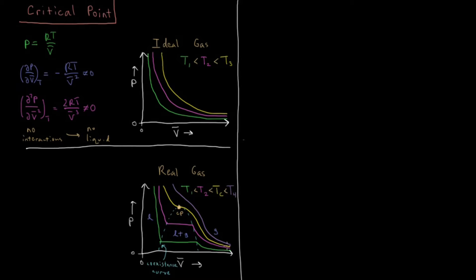At a higher temperature it takes a smaller molar volume to compress and there will be a smaller region where the pressure is flat, but again after some time it gets very high. Then there becomes some critical temperature where there's only an infinitesimal flat region of compression. In fact, the first derivative and second derivative of pressure with respect to molar volume both become zero here at what's called the critical point. At temperatures greater than that, there's no flat region or any inflection — the pressure just keeps increasing as the molar volume decreases.